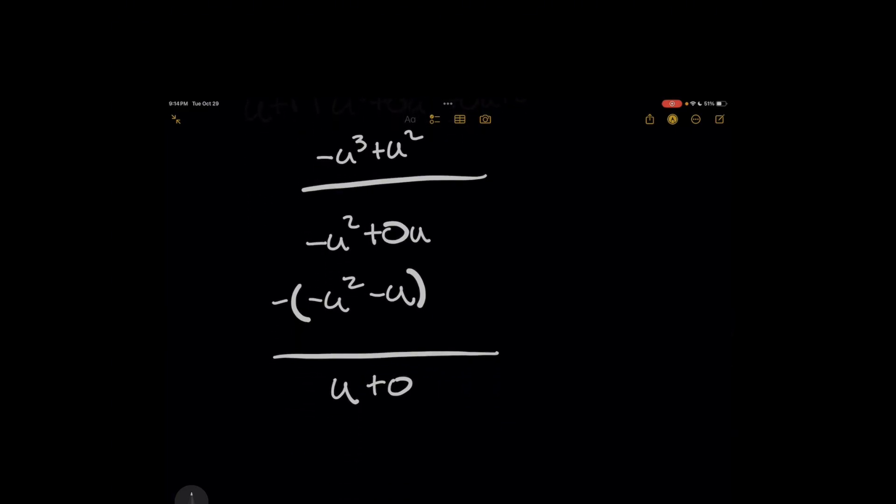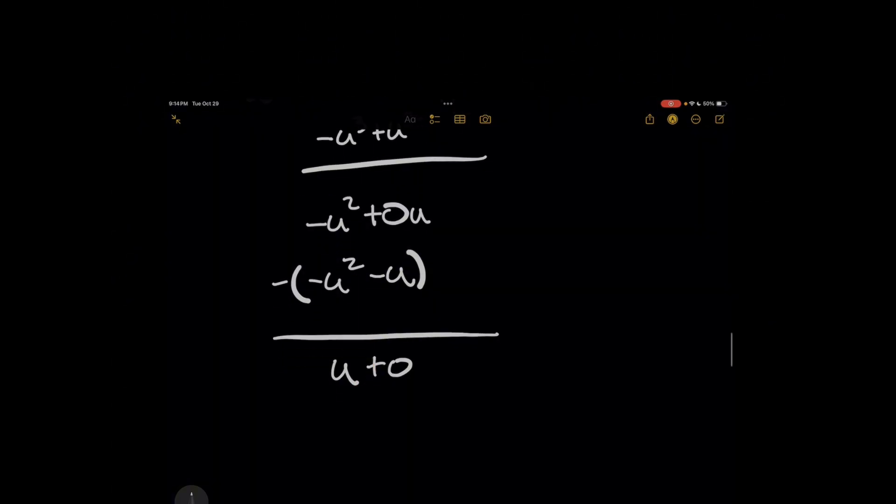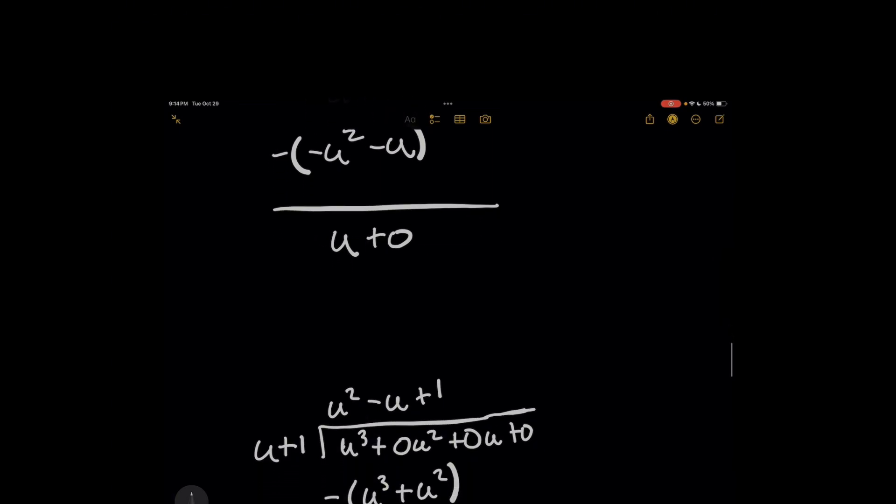Plus now bringing down the next lowest power term, which is just a constant term, which is zero from the dividend above here. Once again, now we're going to repeat this and we're going to say, how many times is u plus 1 going to u? You compare the u terms and that's pretty simple, right? It's just a constant of 1.